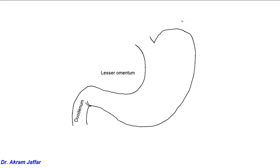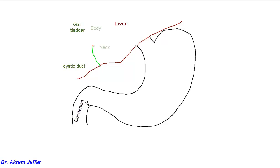Now I will draw the visceral surface of the liver. On the visceral surface of the liver, the gallbladder is located. So this is the cystic duct — neck, body, and fundus of the gallbladder — and then here, the continuation of the cystic duct.